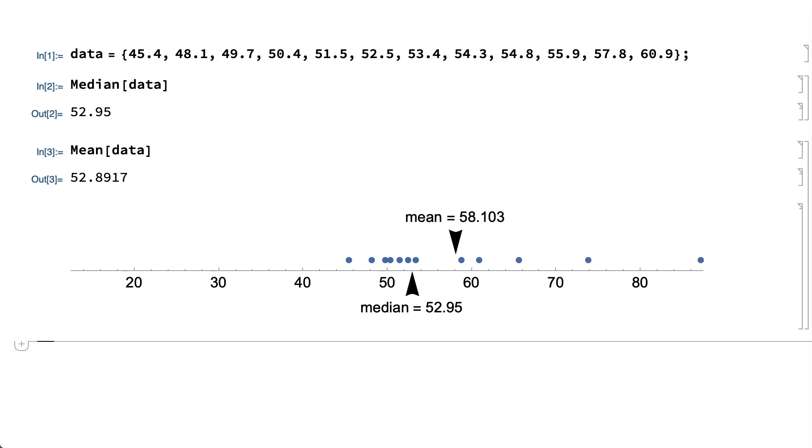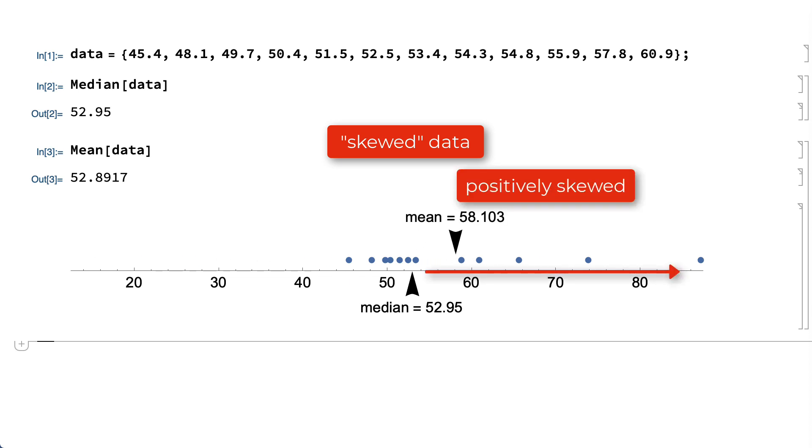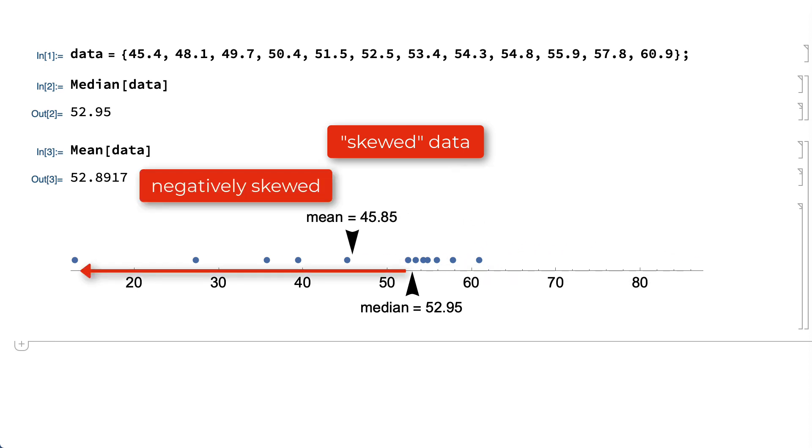If the distribution of the data is not symmetrical, however, such as if the distribution is more spread out or skewed on one side or the other, the mean will typically be affected more than the median. Distributions that are more spread out in the positive direction are called positively skewed, and distributions that are more spread out in the negative direction are called negatively skewed.